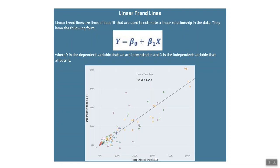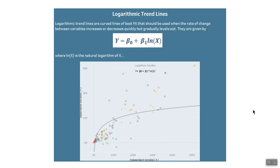The next trendline option available in Tableau is the logarithmic trendline. Logarithmic trendlines are curved lines of best fit that should be used when the rate of change between variables increases or decreases quickly but gradually levels out. Since the log of x is not defined for negative values of x, any marks with values below 0 for the independent variable will be filtered before the trendline is estimated. Logarithmic trendlines should therefore be avoided when a considerable portion of marks contain negative values. An example use case is learning a new skill as a function of time — improvement comes quickly for a new football player but then gets slower as they become an expert.